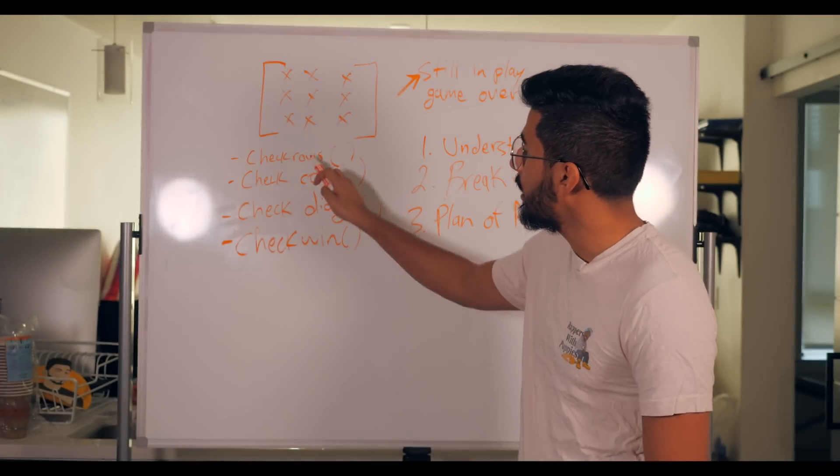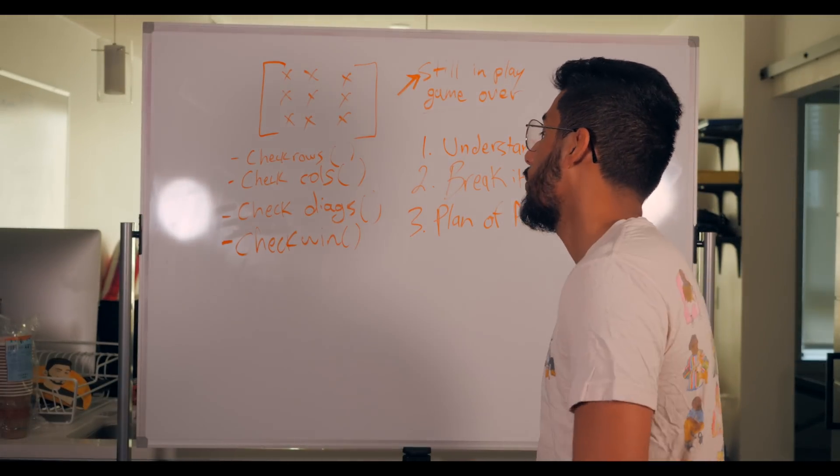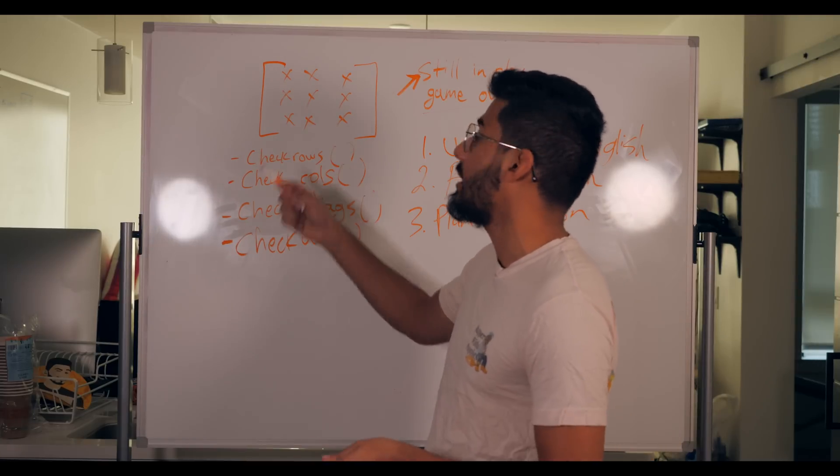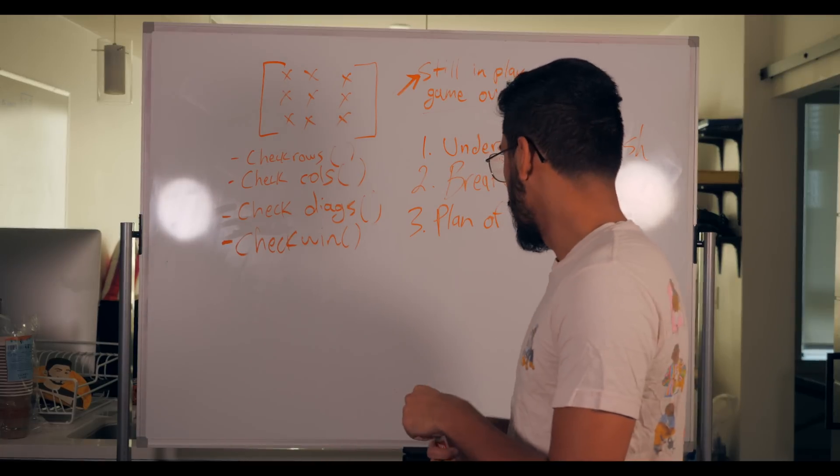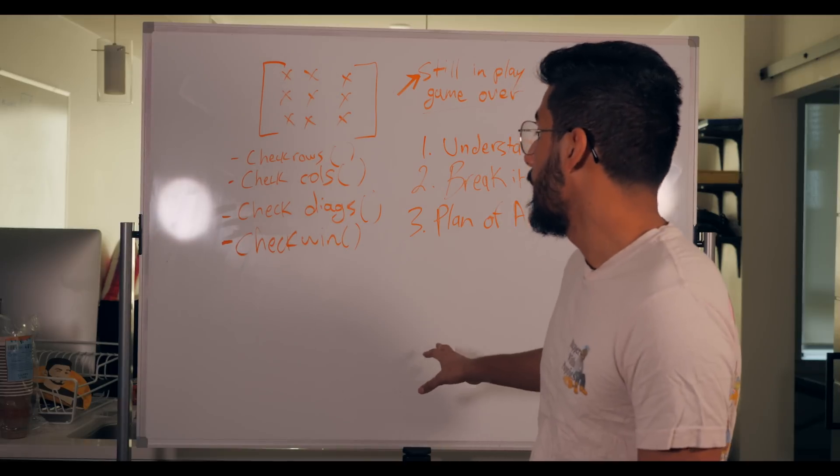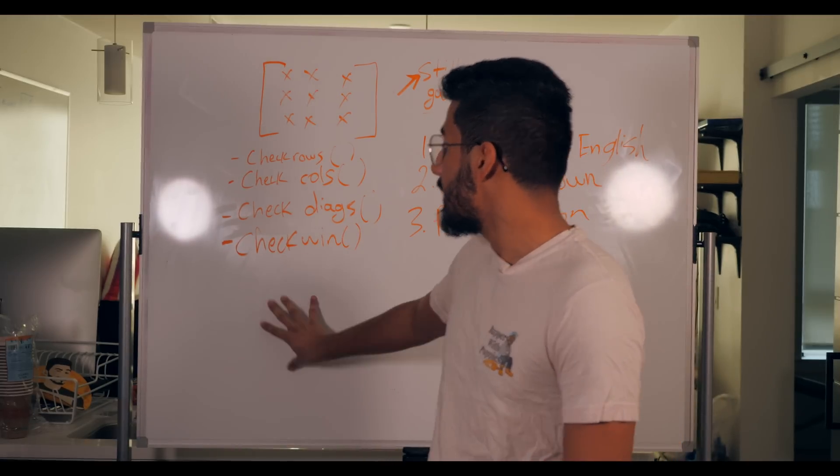And then it's simply about what order you wanna do this in, what's gonna be, like, are you gonna make check rows first, or are you gonna make check win first? Are you gonna make check diags first, or are you gonna make the 3D board representation first? So it all is gonna be about what your plan of action is.